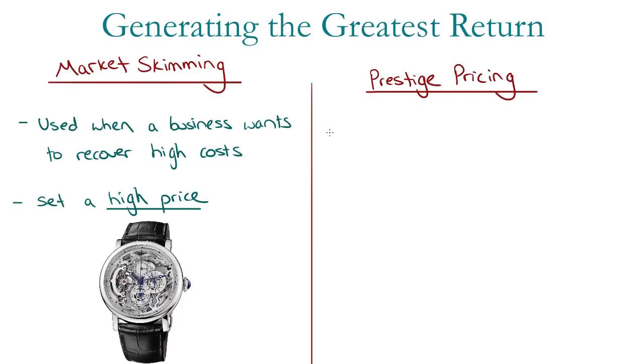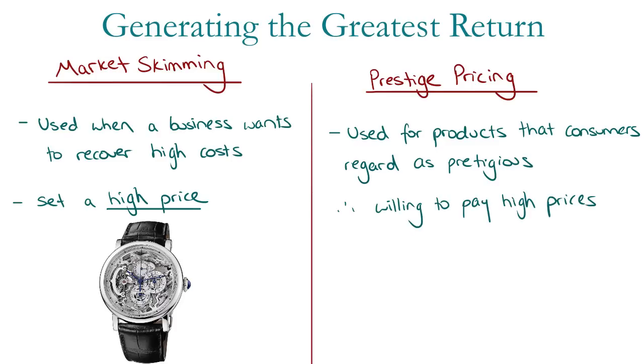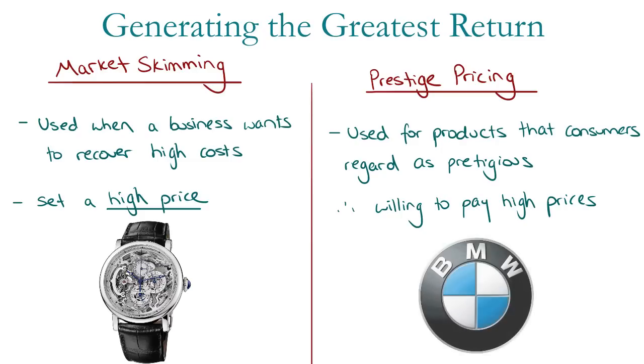Secondly, prestige pricing, which is used for products that consumers regard as prestigious and therefore they are willing to pay higher prices for. For example, since 1960, the use of prestige pricing by BMW has ensured strong demand and growing confidence in the brand. BMW now has a 27.8% share of the European car market in Australia.